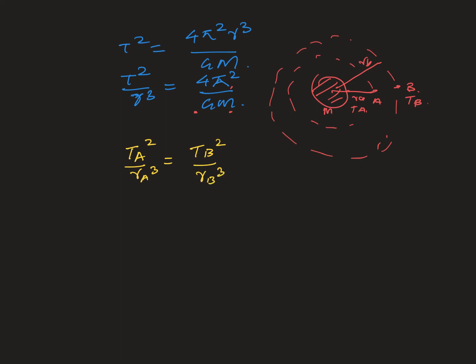There's a relationship between the periods and radii of two orbits around a planet. In another video we discuss Kepler's laws. One of his laws was about the relationship between T and r - he proposed that T squared is proportional to r cubed. The difference is that using Newton's gravitational formula, we are able to find that constant of proportionality.